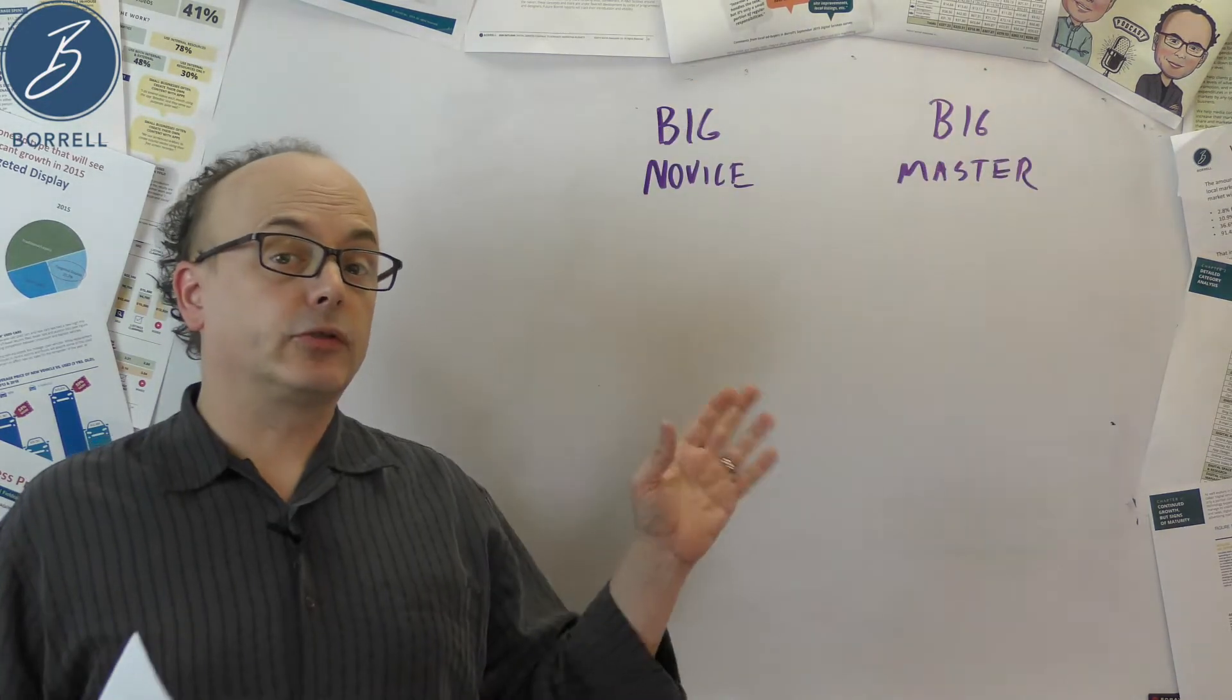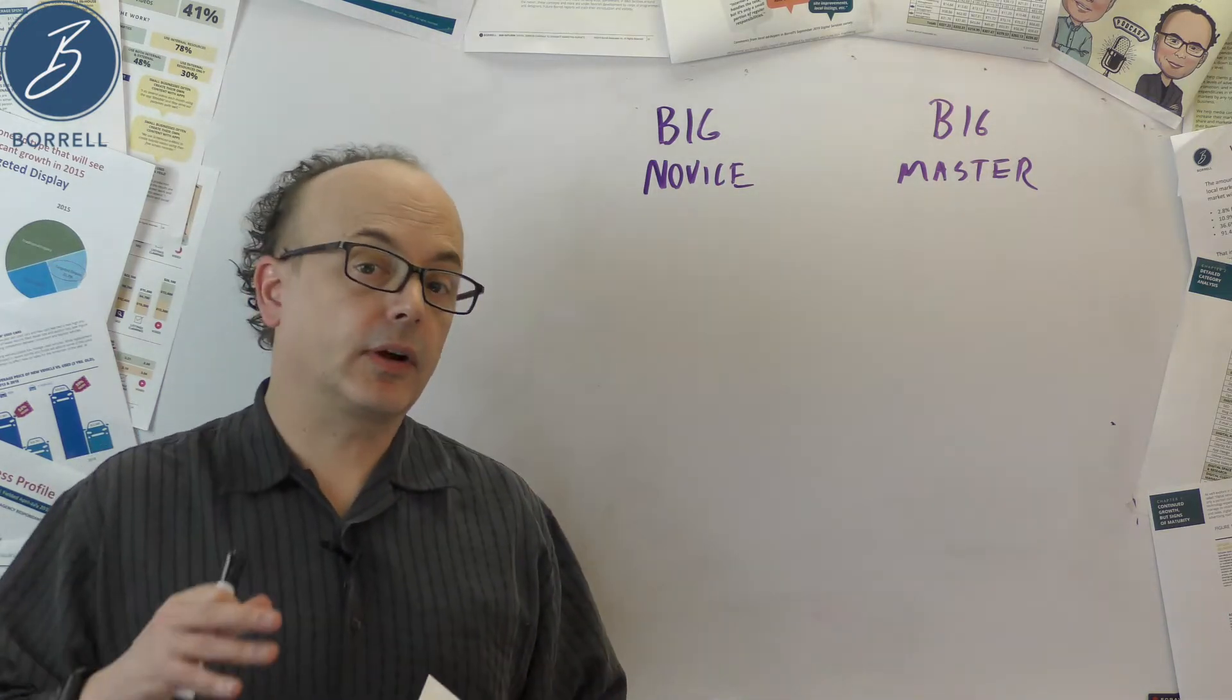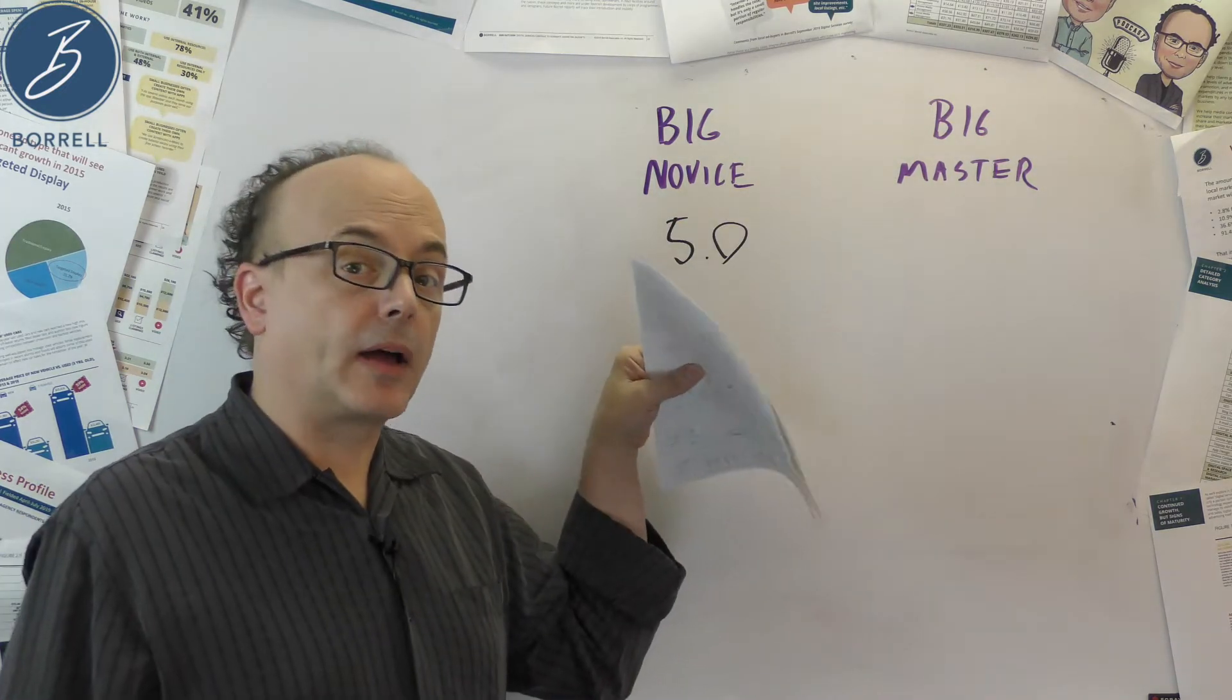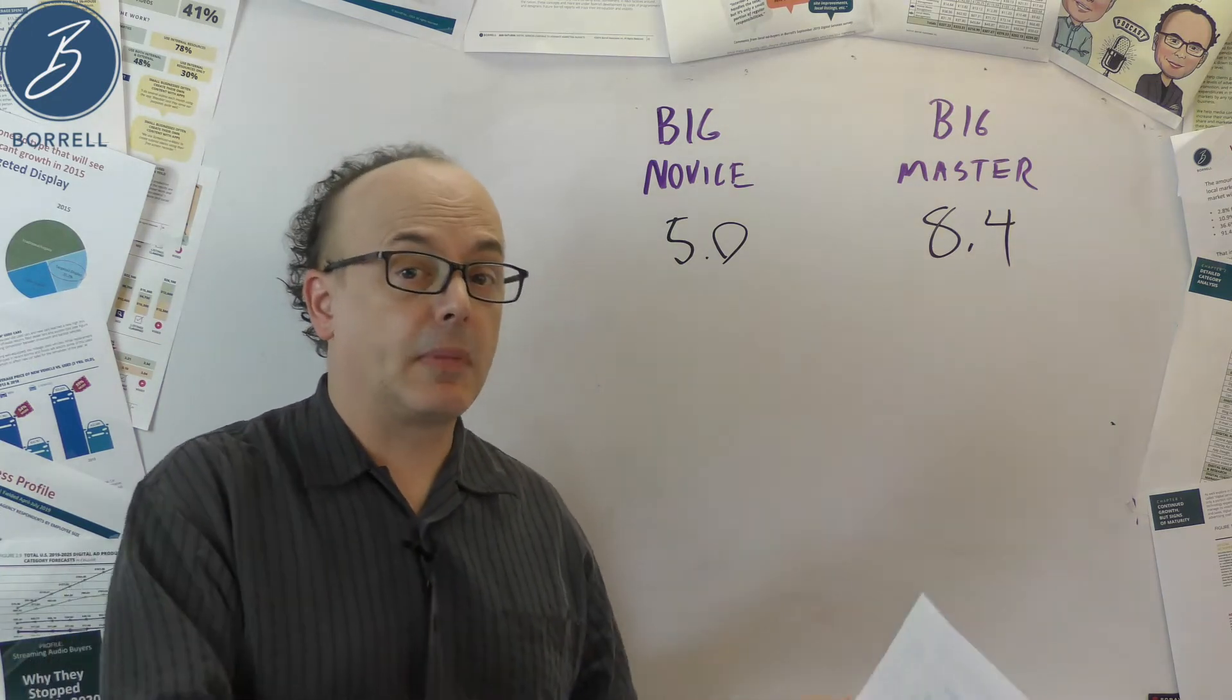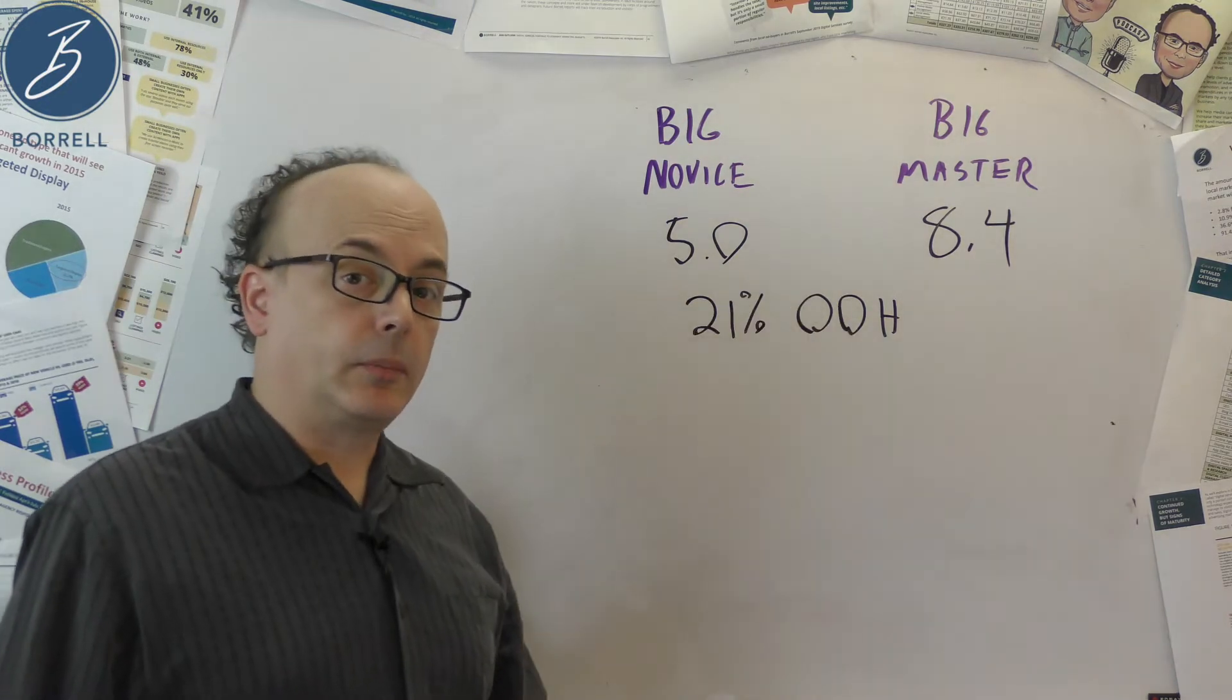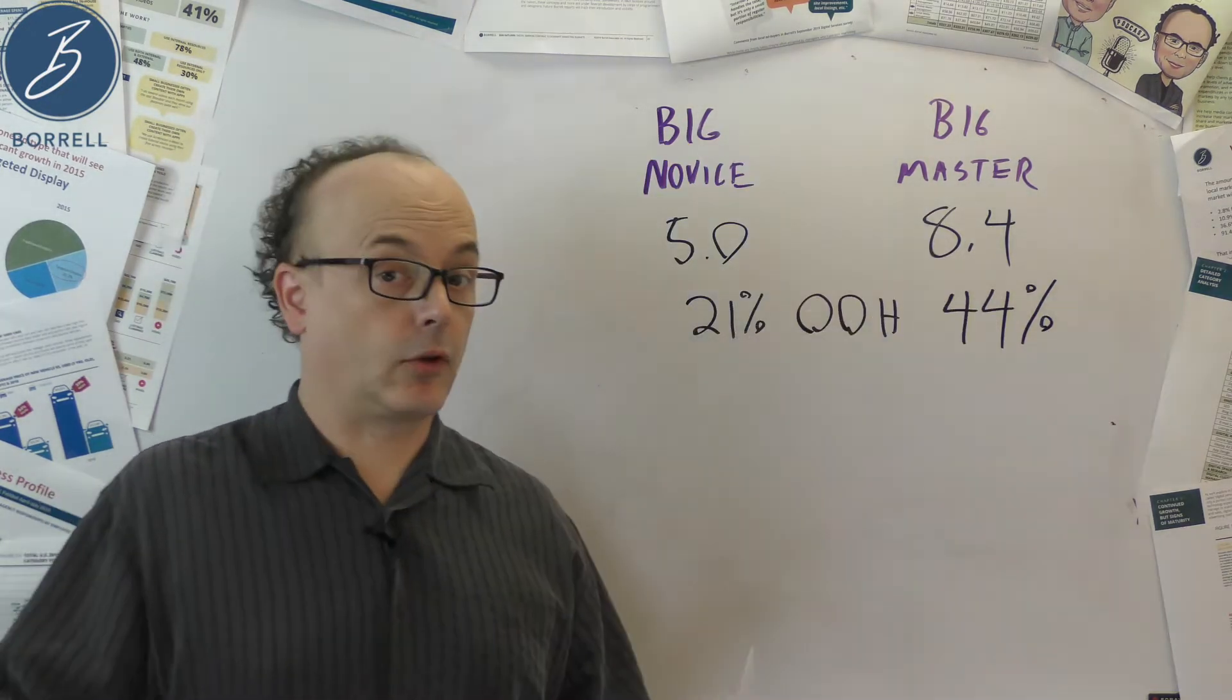So one of the major differences that jumped out right away was on average how many different kinds of media these two were buying. On average, big novices were buying five different types of media. Big masters, 8.4. Not only that, there was certain media that more big masters were buying than big novices. For instance, out of home. 21% of big novices were buying out of home last year, compared to 44% of big masters. And so it goes.